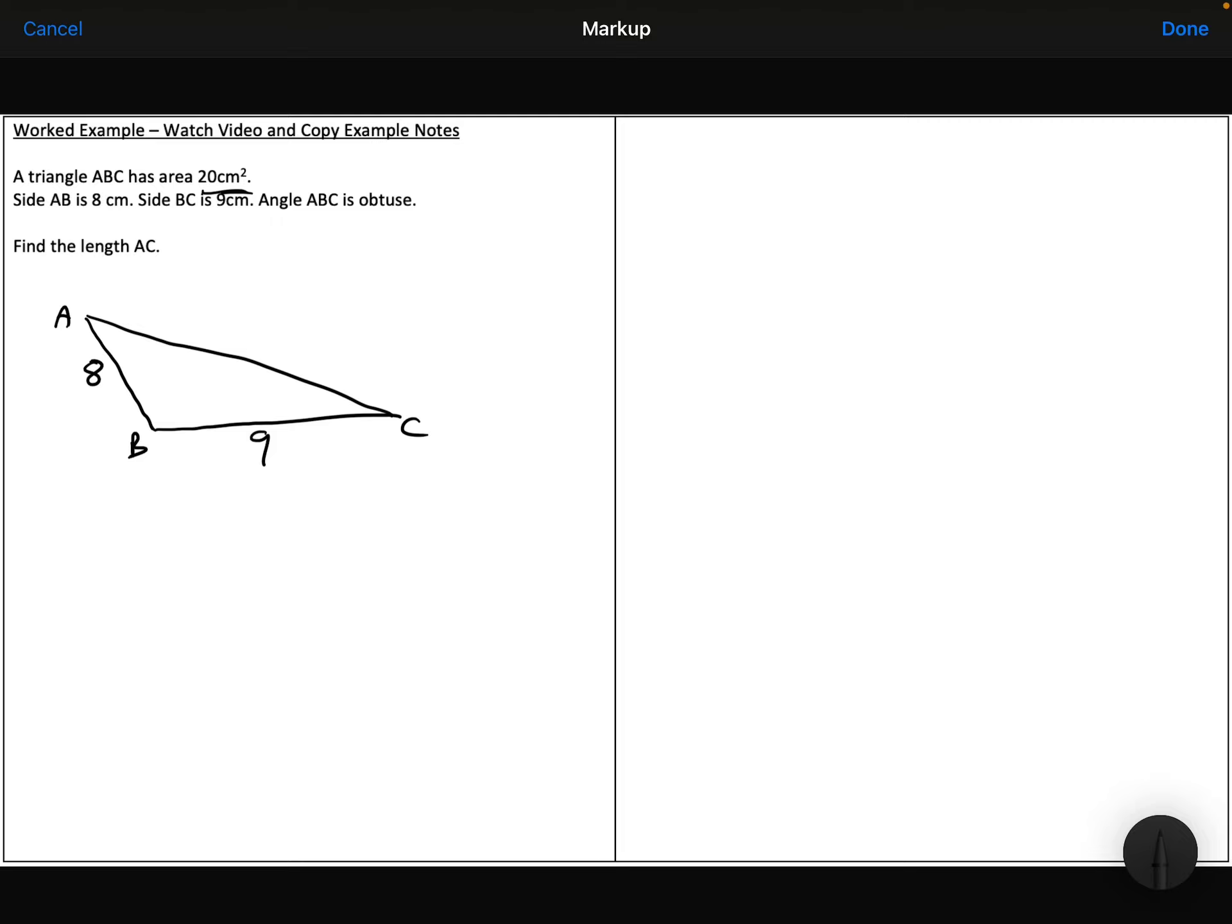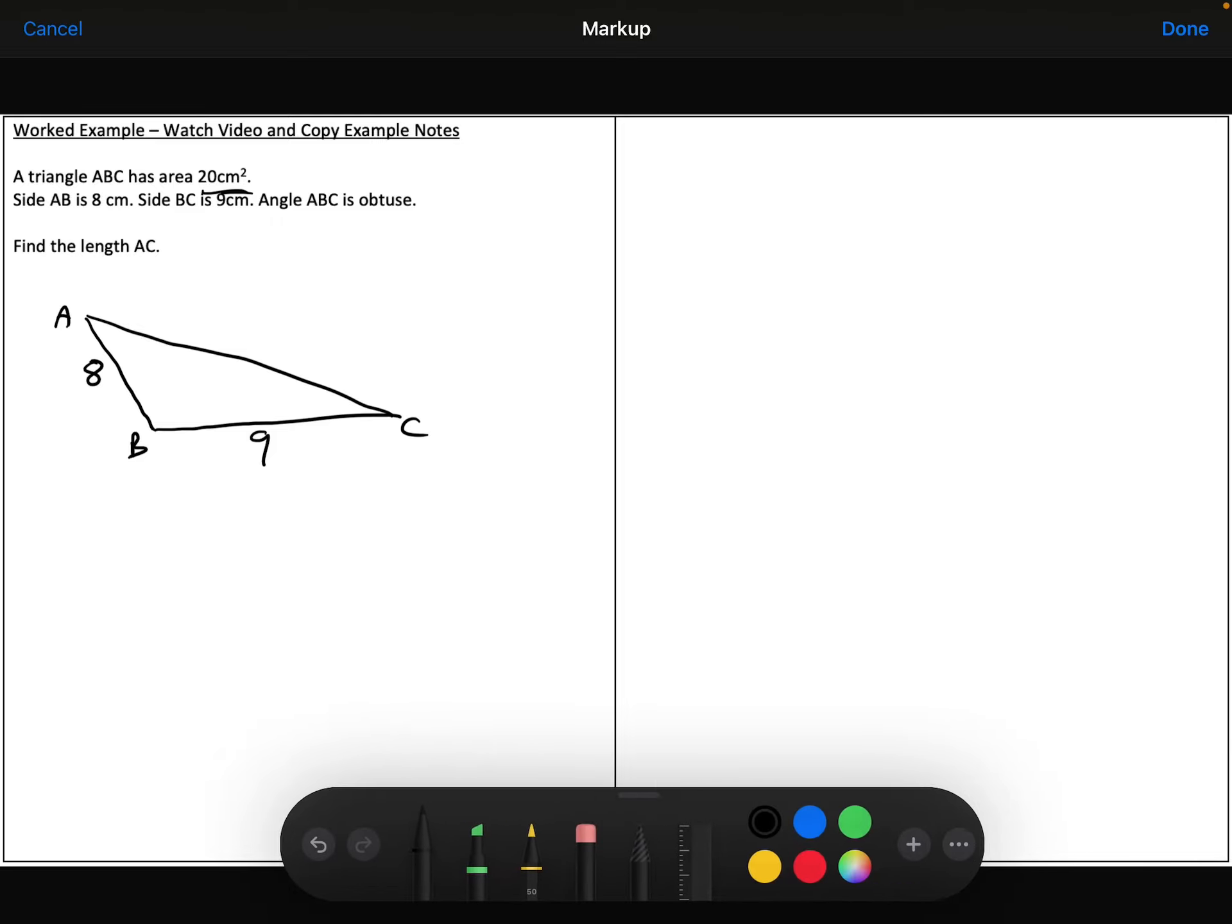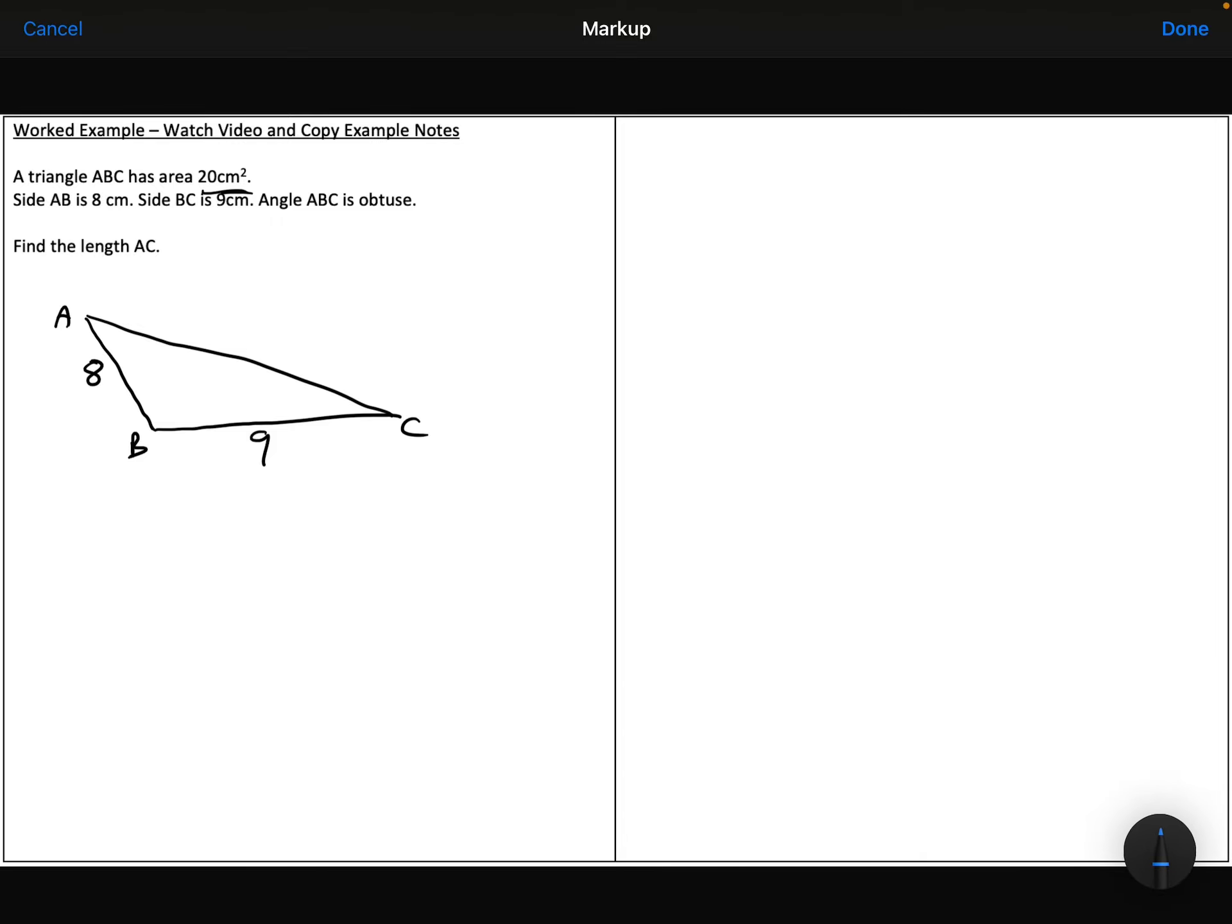and I know the area is 20. So with that information, I can use the area formula that says a half AB sine C is the area of a triangle, where angle C is the angle that's in between the two sides A and B. So I can say that a half 8 times 9 times sine of the angle in between them, which is this angle here, would be equal to 20.